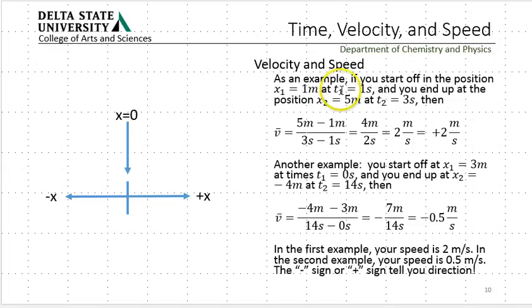So, if you start off in position at one meter at time one second, you end up in another position, five meters at time three seconds. What's your velocity? Well, five meters minus one meter over three seconds minus one second is four meters per two seconds. Plus two meters per second. This is your average velocity or your speed because we don't have a direction other than saying this is in the x direction, right?